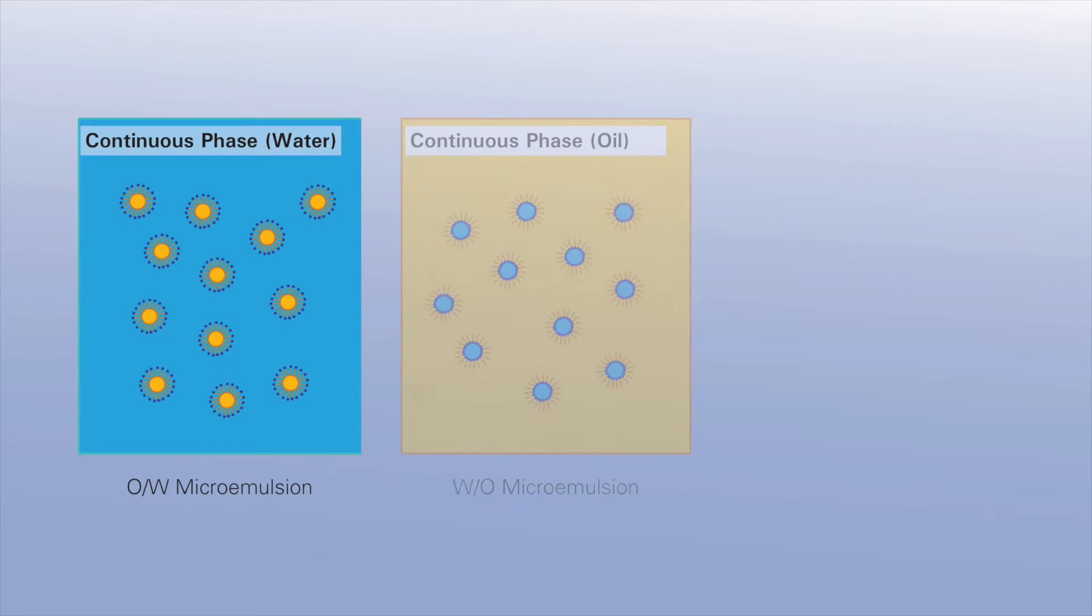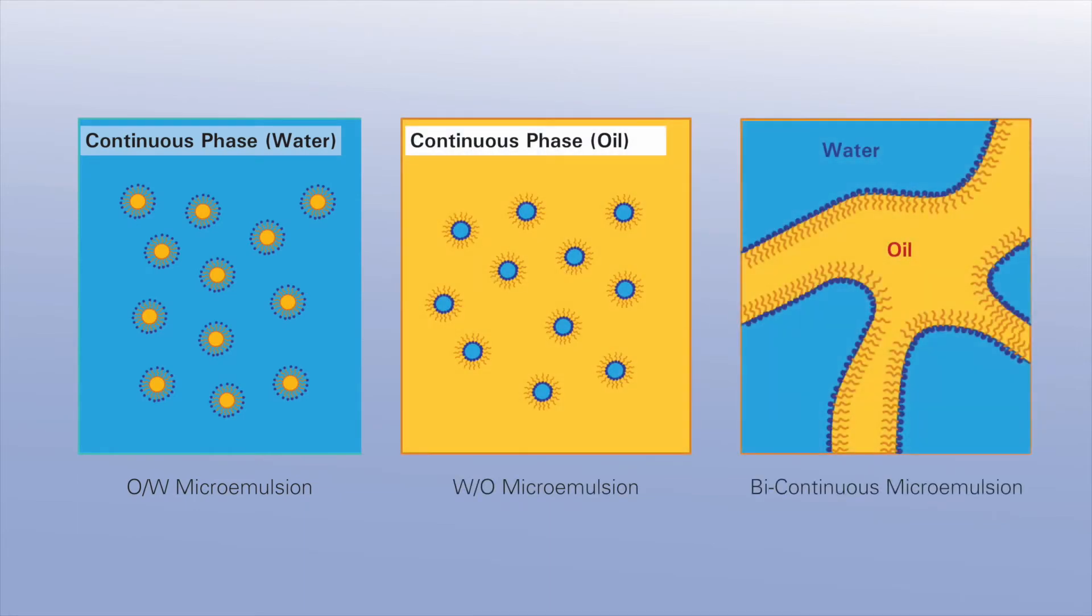Microemulsions can be oil in water, water in oil, or bicontinuous depending on the oil to water ratio and surfactant selection.